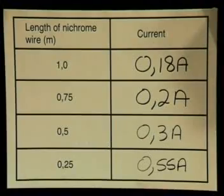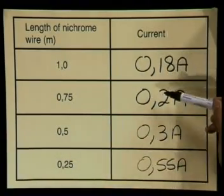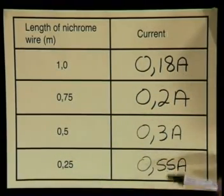So what can we conclude from these results? As the length of nichrome wire gets smaller, the current reading is actually increasing. The last factor that we need to mention that will influence the flow of electric current through a conductor is that of temperature. Unfortunately, we do not have time in today's lesson to do that experiment, but perhaps you can ask your class teacher to perform that experiment for you. Just to let you know that as temperature increases, you will find that the current passing through an electrical conductor will decrease.